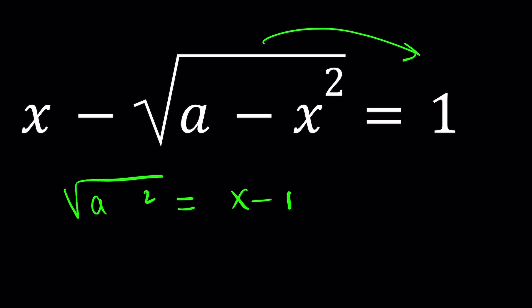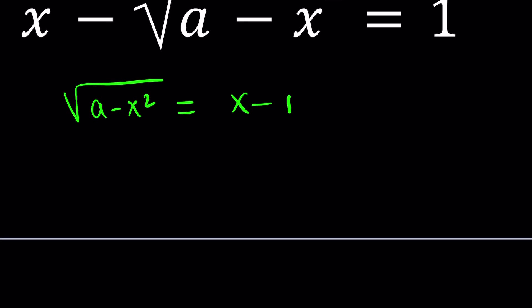Now, in this equation, I want you to pay attention to two things. First of all, x minus 1 is the square root of something, and as you know, if x is real, the square root needs to be greater than or equal to 0. So this implies that x minus 1 is greater than or equal to 0, which implies that x is greater than or equal to 1. That's something we need to record because our solutions have to satisfy all these criteria.